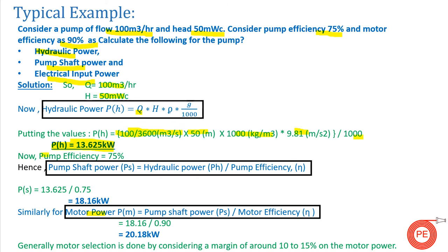With pump efficiency of 75 percent, the pump shaft power = hydraulic power / pump efficiency = 13.65 / 0.75 = 18.16 kW. For motor power, the formula is pump shaft power / motor efficiency = 18.16 / 0.9 = 20.18 kW. So the power consumption of the motor is 20.18 kW. When designing the system, the selected motor should have a capacity greater than this value.